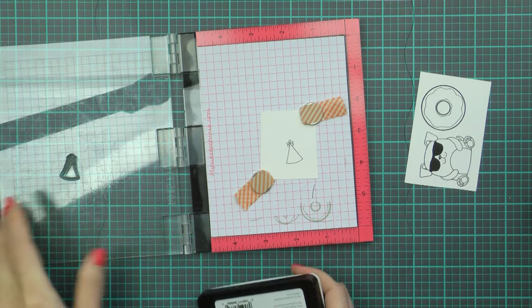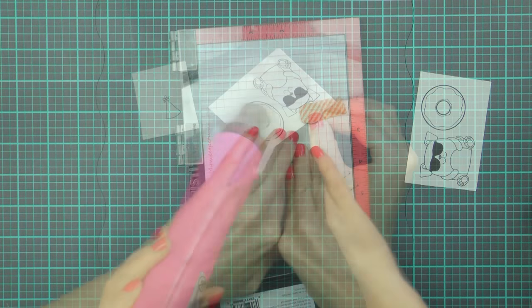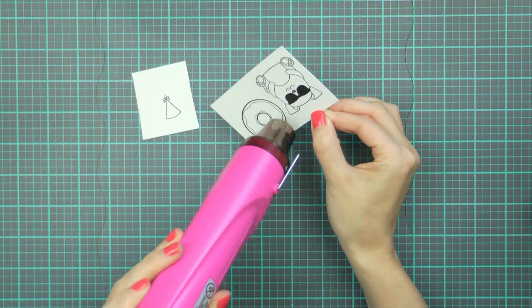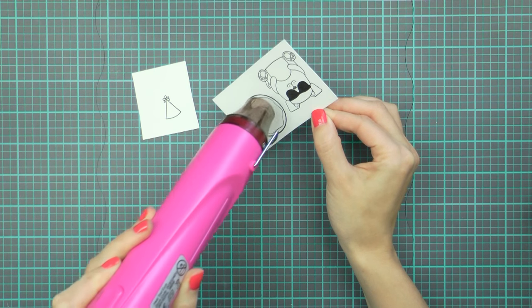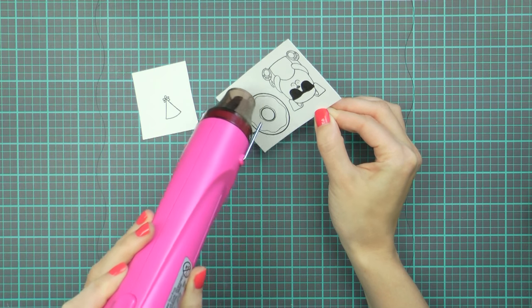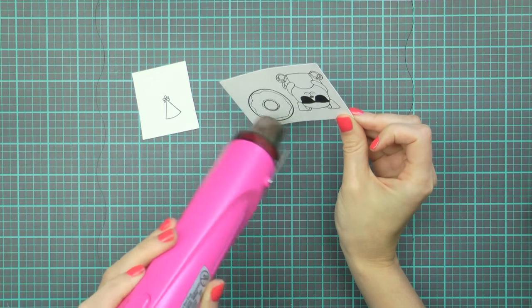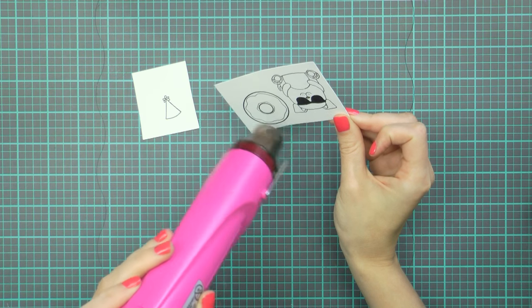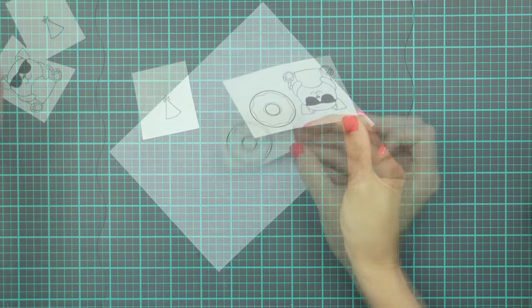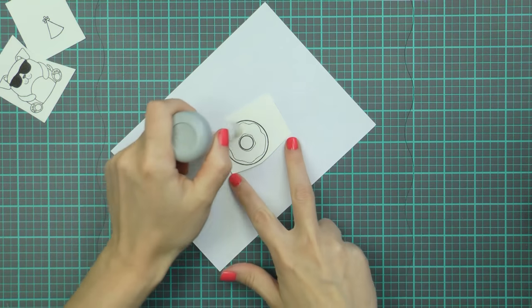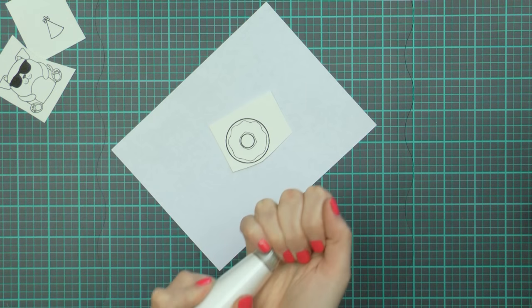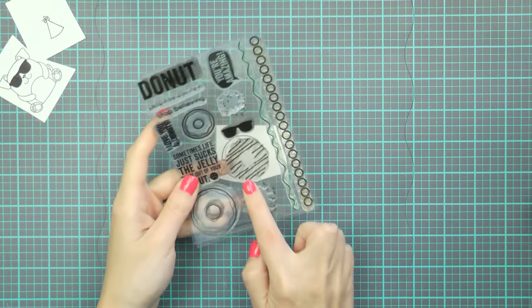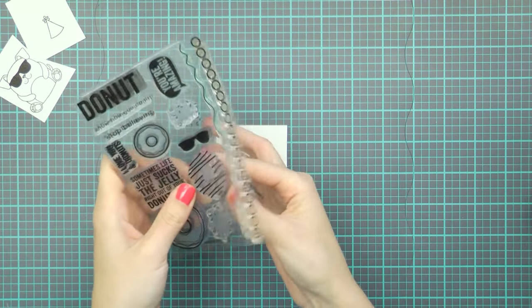So once everything was pre-stamped I started working on the donut. Because I needed to heat emboss the next layer, I used my heat tool to first dry the ink. I needed it to be bone dry for heat embossing. Now this ink, the intense black ink or any dye ink dries rather quickly, almost instantly in most cases, so it doesn't smear. But for heat embossing it's always best to zap the stamped image with a heat tool to make sure the ink is completely dry.